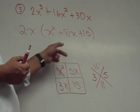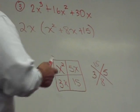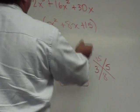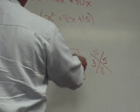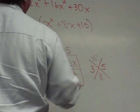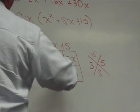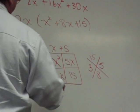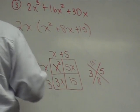What do they have in common? X. Common factor in the second column, positive 5. So, I write plus 5. First row, X. And in my second row, positive 3.